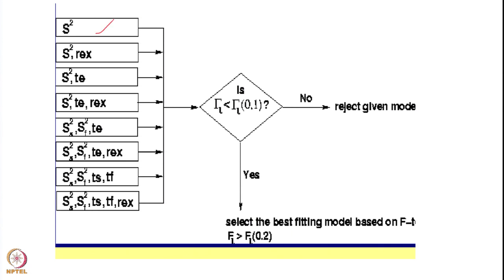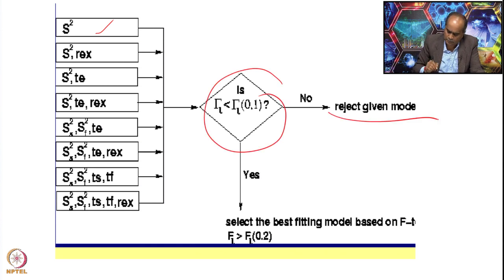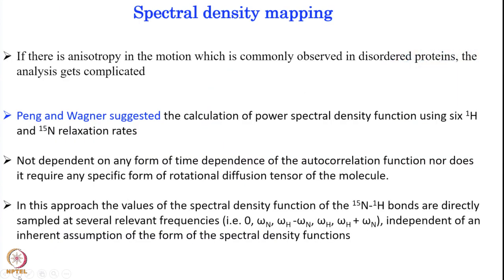You start with models: S², or S² with τe, or S² with Rex, or S² with τe and Rex — testing slow or fast motions, checking whether the model fits. If not, reject that model, take another, and keep iterating to find the generalized order parameter. However, proteins are not always globular — there is often anisotropy, and in disordered regions or fully disordered proteins, the Lipari-Szabo model-free approach becomes complicated.